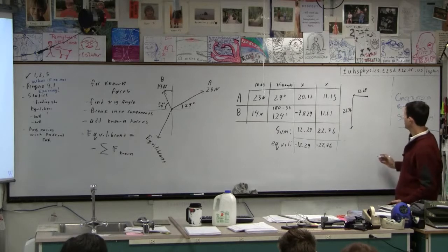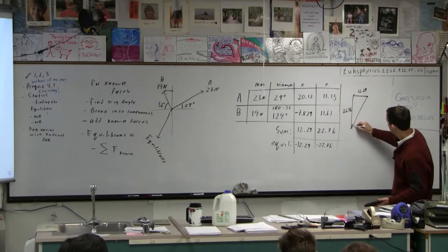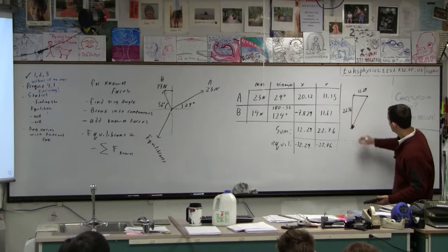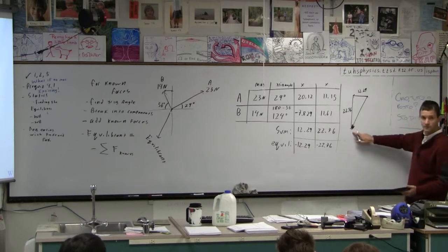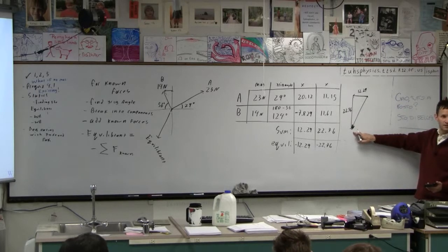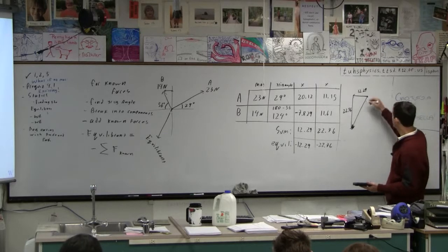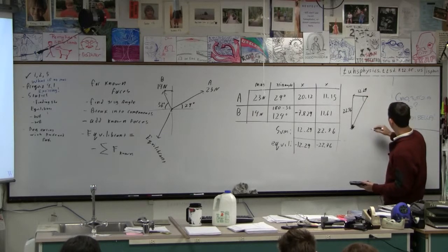And then the final thing is what? That is the vector, yes? We've got to be able to draw the vector. Okay? And the final thing would be to find this angle. Let's find this angle just for fun.